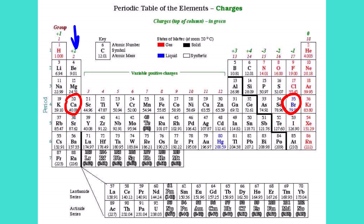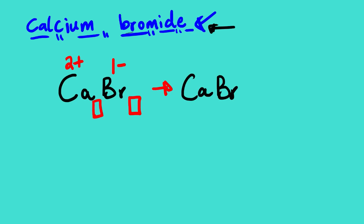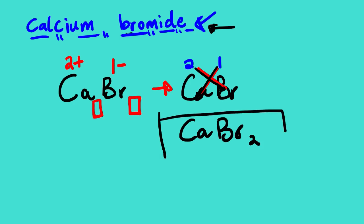Looking at the group that calcium is in, you can see the oxidation number is 2+. Then we look at bromine — you can see it's 1-. So for calcium it's 2+ and for bromine it's 1-. We don't include the signs; we simply put the numbers: 2 and 1. Then we cross multiply — this trick was covered in one of the basics. The 1 comes here and the 2 comes here, giving us CaBr₂.